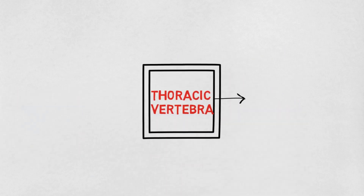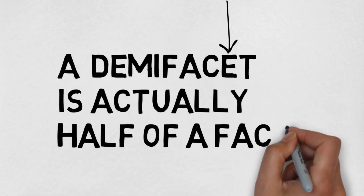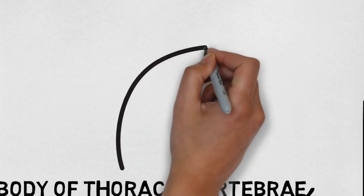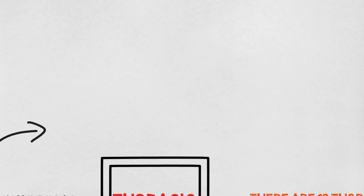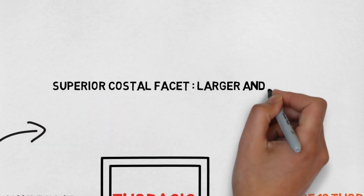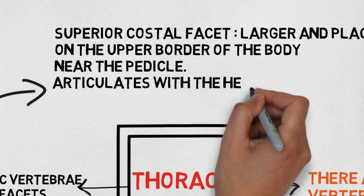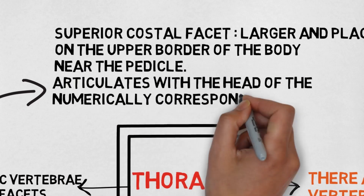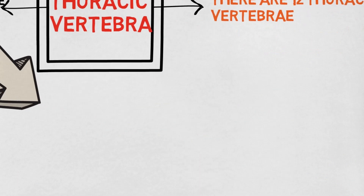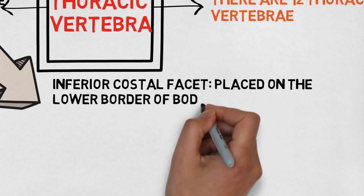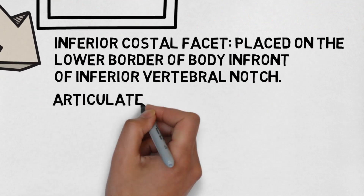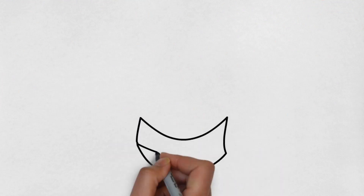Let's see some points about the thoracic vertebrae. Basically, there are 12 thoracic vertebrae in the spinal column. The body of the thoracic vertebrae bears 2 costal demi-faces — and demi-faces means half of a facet. The costal facets include: firstly, the superior costal facet, which is larger in size and placed on the upper border of the body near the pedicle, and it articulates with the head of the numerically corresponding rib. The other is the inferior costal facet, placed on the lower border in front of the inferior vertebral notch, and it articulates with the next lower rib.